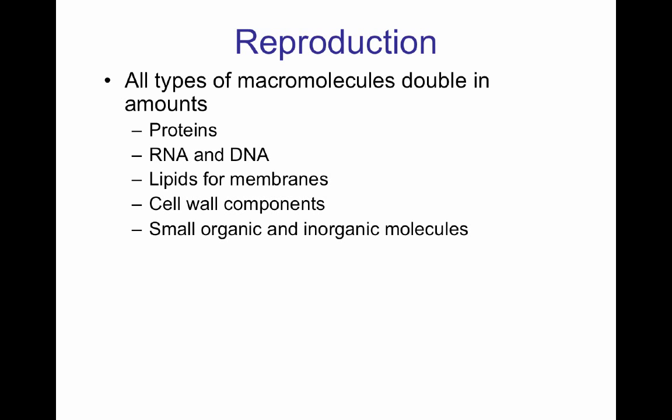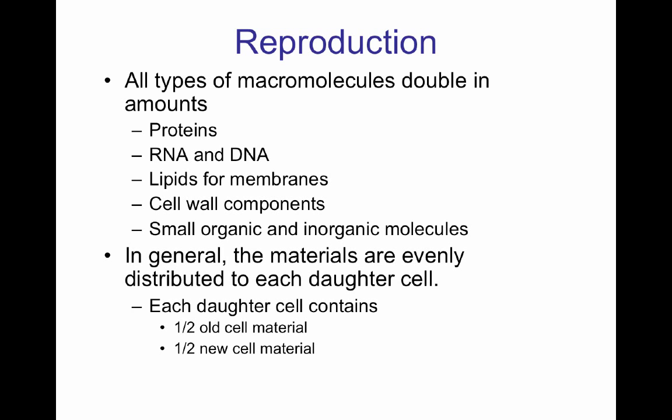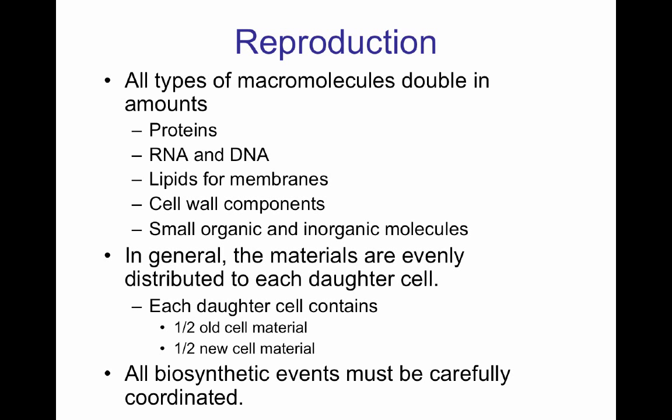When we think about cell division with a symmetric cell division, each daughter cell is going to get half the material from the mother — half stays with the old cell and half is new material given to the new cell. So all biosynthetic events must be carefully coordinated so each daughter cell receives half the material when it divides.